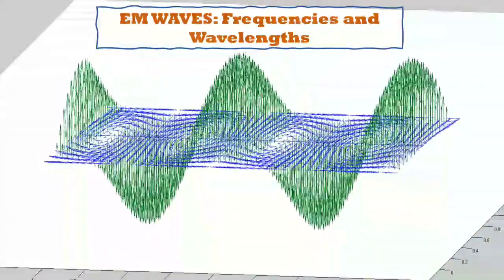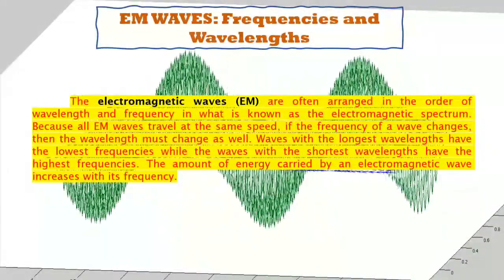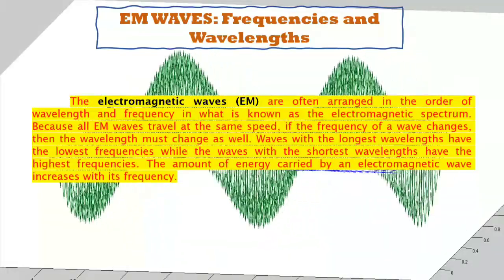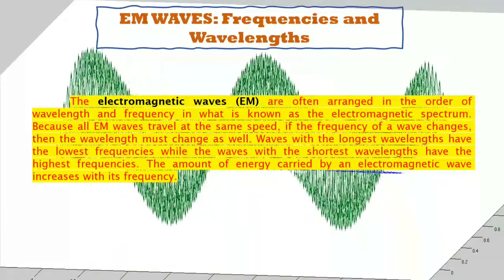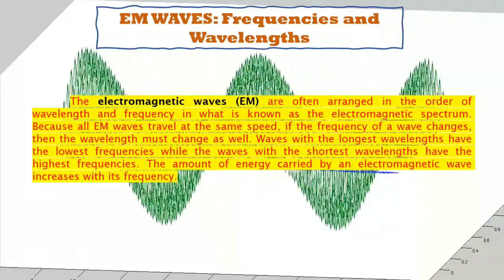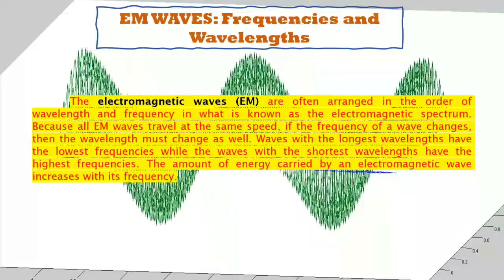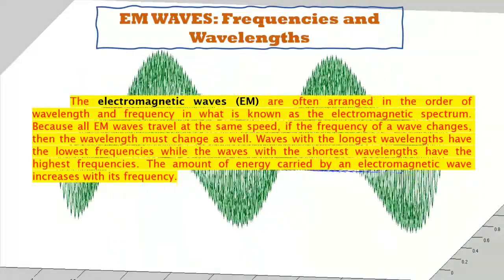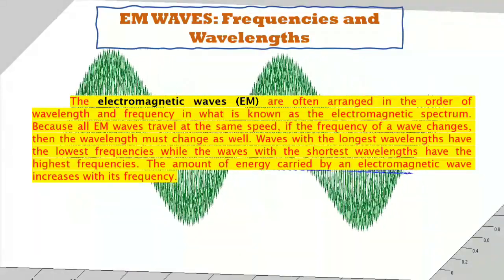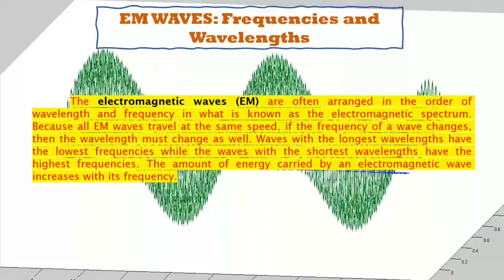Electromagnetic waves or EM are often arranged in the order of wavelength and frequency in what is known as the electromagnetic spectrum. Because all electromagnetic waves travel at the same speed, if the frequency of a wave changes, then the wavelength must change as well. Waves with the longest wavelengths have the lowest frequencies, while the waves with the shortest wavelengths have the highest frequencies. The amount of energy carried by an electromagnetic wave increases with its frequency.